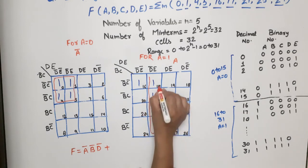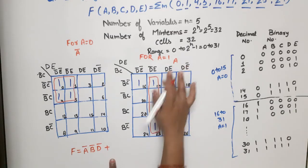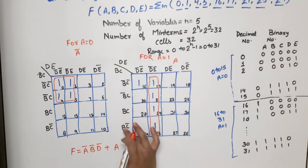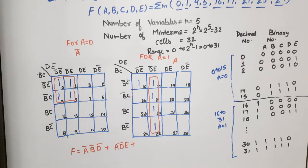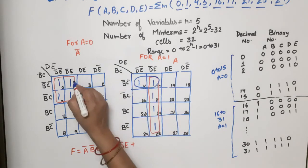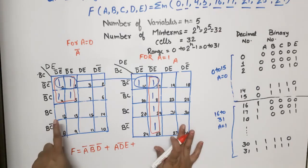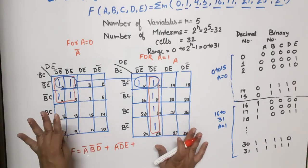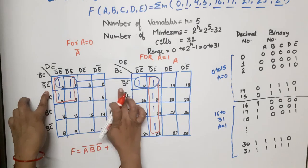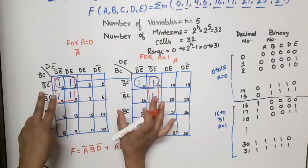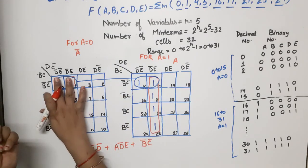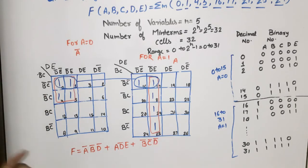Next, looking at the A=1 K-map, the minterms 17, 21, 25, 29 form a quad. This is the A map, so we write A. All four rows are used, and the common column is D-bar·E. So this term is A·D-bar·E. Now we also check pairing across both K-maps. The minterms at the same positions in both maps can be grouped together. When both maps are used, A-bar and A cancel out. From both maps, B-bar·C-bar rows are used, and the common column values give B-bar. So this final term is B-bar·C-bar. The final simplified expression is F = A-bar·B-bar·D-bar + A·D-bar·E + B-bar·C-bar.